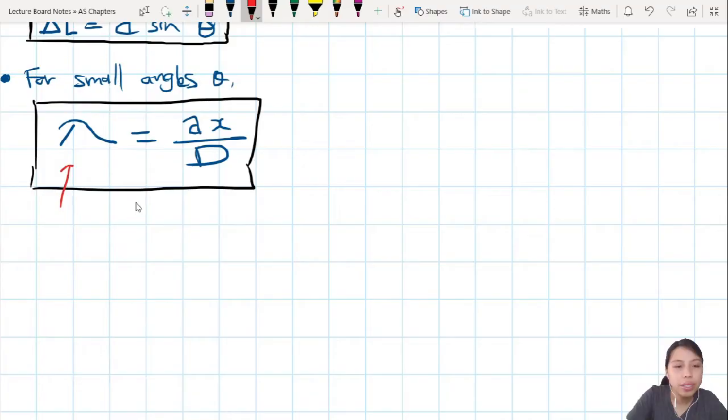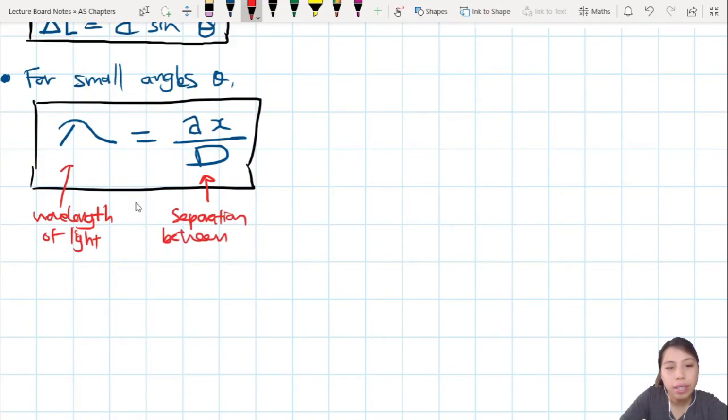So lambda is your wavelength of your light that you are using. Only should have one wavelength of light. I guess you could use water too. Usually it's done for light. D here, as we look at the diagram, is your separation or distance, I guess you say distance not separation, between the screen and your slits.